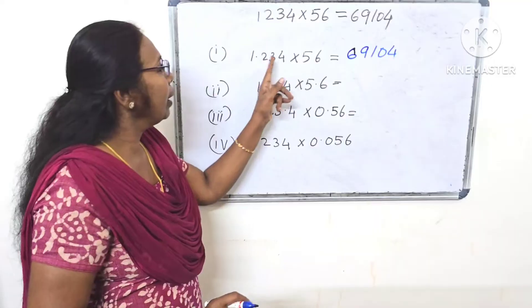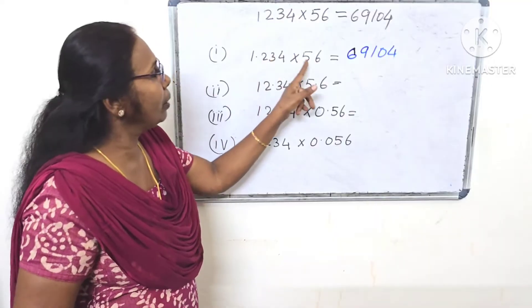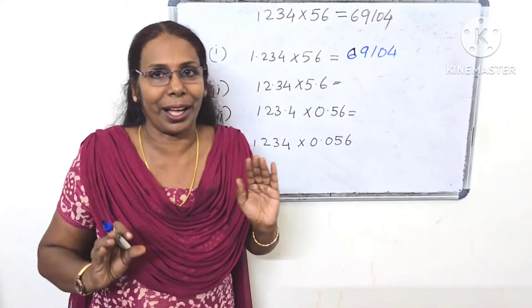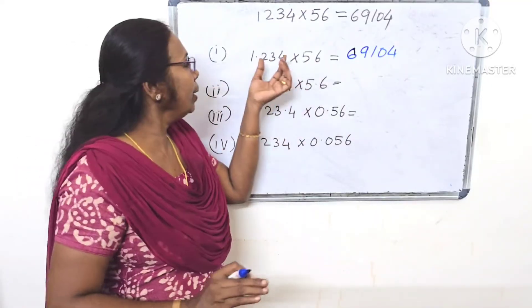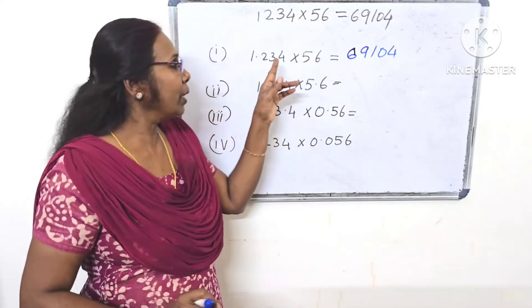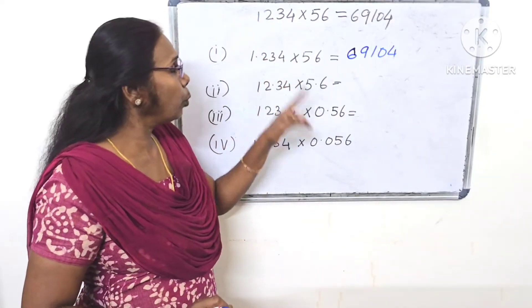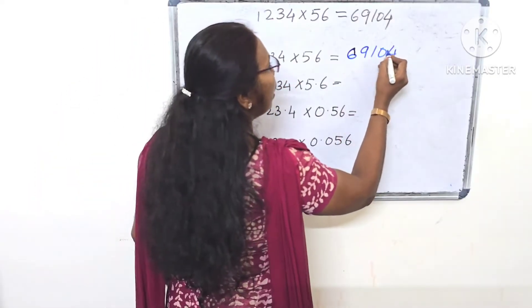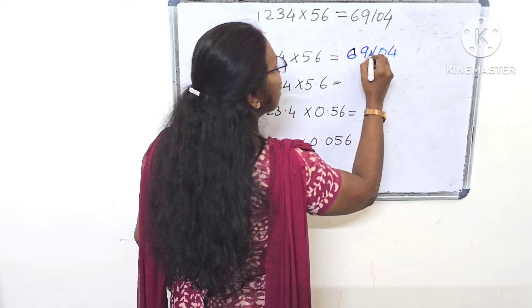Here, here, here. Let's take a look at the numbers. How many are you here? Three. So the answer is two, three.